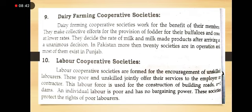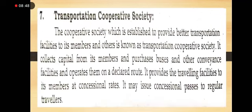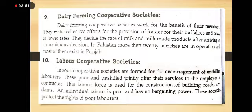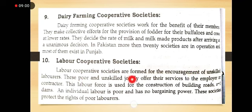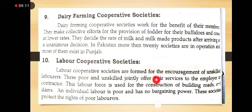The tenth kind is the labor cooperative society. Labor cooperative societies are formed for the encouragement of unskilled labor. These poor and unskilled workers jointly offer their services to an employer or contractor. This labor force is used for the construction of buildings, roads, and dams.